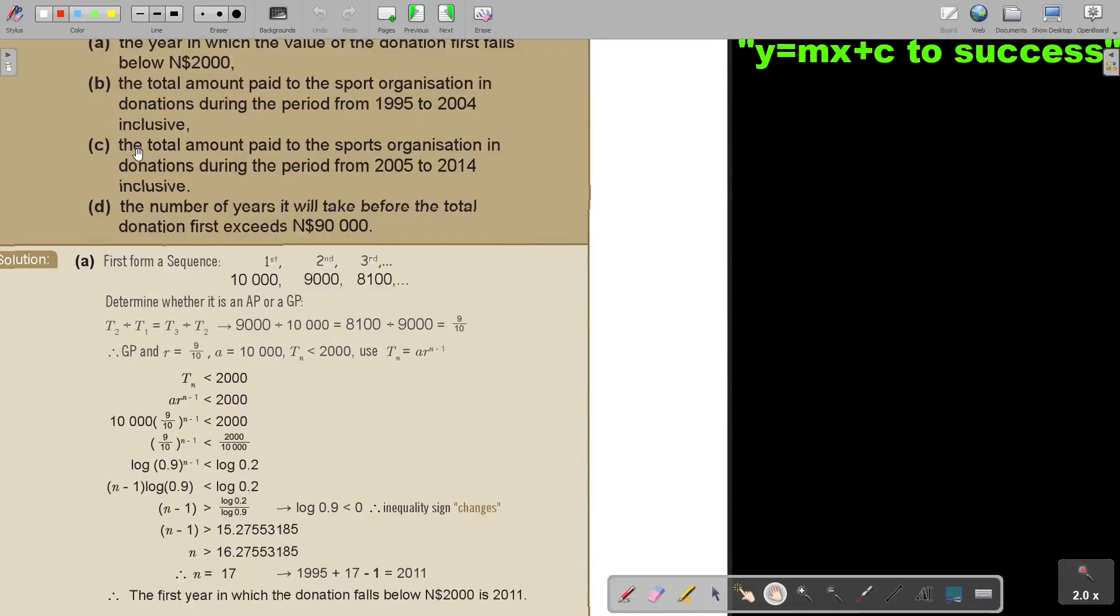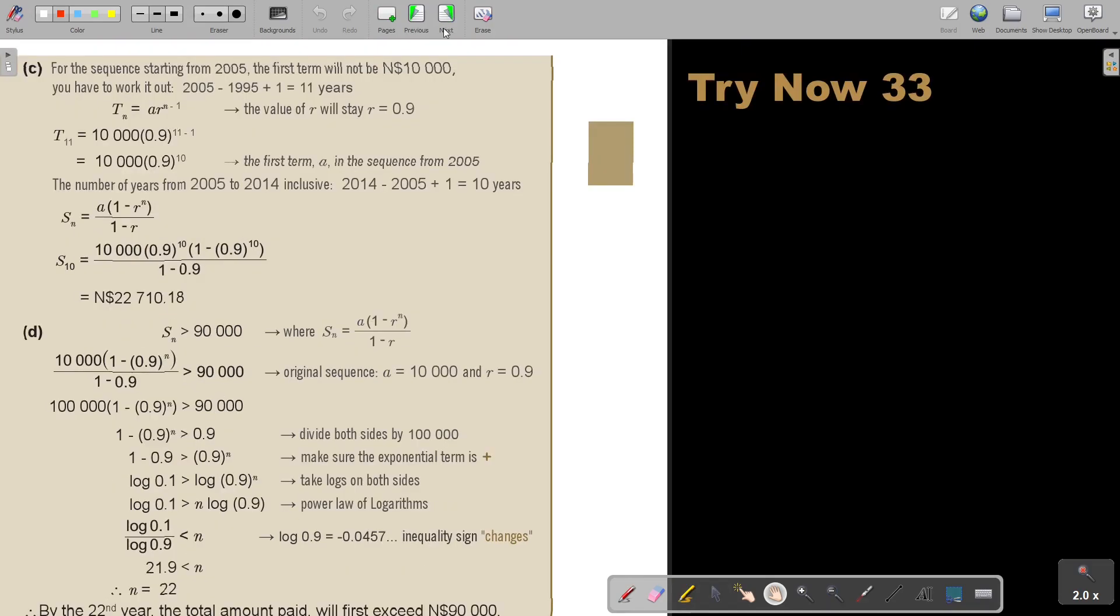Let's look at number C. The total amount paid to the sport organization in donations during the period from 2005 to 2014, inclusive. Now, the thing is, the sequence will not start with 10,000. So I first have to work out what will be the term in 2005. To find that, I must see what is the position, what's the value of N in 2005. So you have to work out 2005 minus 1995 plus 1, so it's the 11th term. So I first, to get that value of A, where the sequence starts now, I must first work out T11.